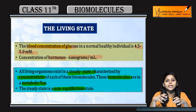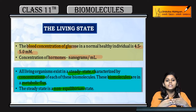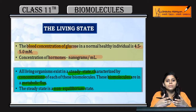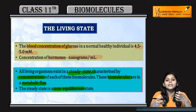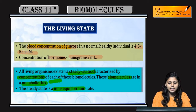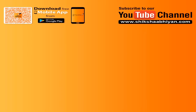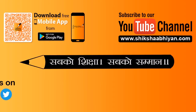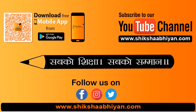The breaking and making of bonds in metabolism happens with energy input. Therefore, a living organism can be called living only if it is not at equilibrium but is in a steady state — metabolic flux is continuously occurring in our body. This is why the living state is essentially a state of metabolic flux; living organisms are in a steady state.